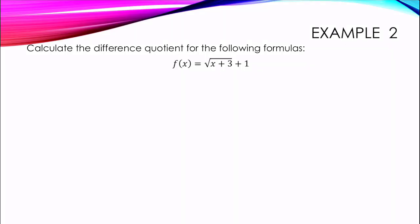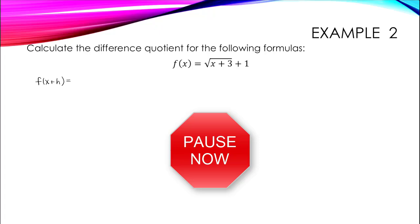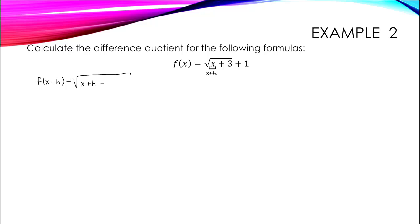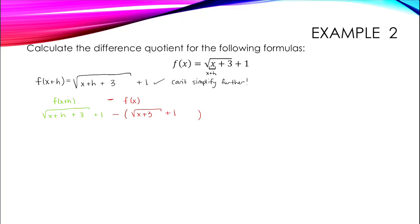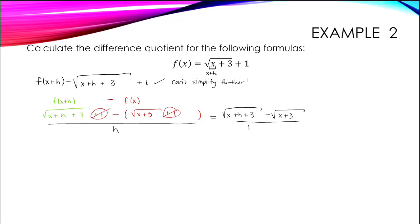For our second example, we are calculating the difference quotient for f of x equals the square root of x plus 3 plus 1. We start by writing out the formula for f of x plus h. You should get the square root of x plus h plus 3 plus 1. This can't be simplified further, and neither can f of x, so we are ready to plug into our difference quotient formula. Once we plug in, we get numerator: square root of x plus h plus 3 plus 1 minus square root of x plus 3 plus 1, all over h. Notice that the plus 1s cancel, leaving us with square root of x plus h plus 3 minus square root of x plus 3 for our numerator. It may feel like we can't simplify further, but we can't plug in 0 for h without division by 0, so we have to get creative.